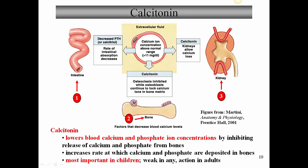Calcitonin is of doubtful significance in healthy human adults. It's most important in children who have very high bone turnover and must carefully regulate blood calcium levels. Calcitonin acts at the same places as parathyroid hormone but in the opposite direction: it decreases absorption of calcium from the intestine, inhibits osteoclasts allowing osteoblasts to build and store new bone - pulling calcium out of the blood - and at the kidneys it increases excretion of calcium, lowering blood calcium levels. So calcitonin is known as an antagonist of parathyroid hormone.